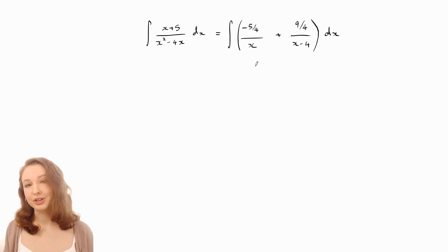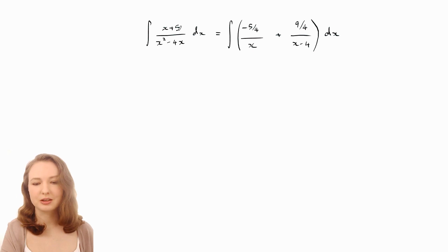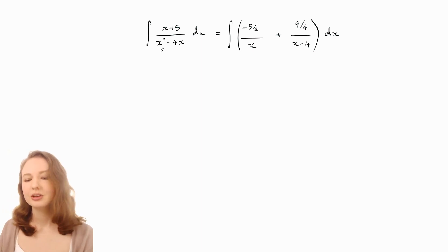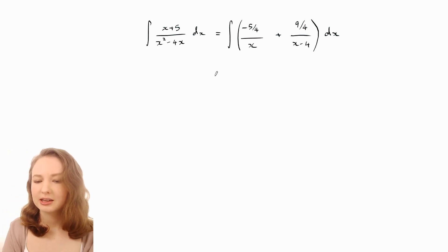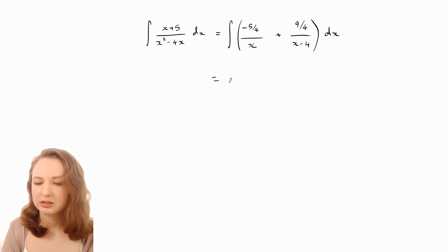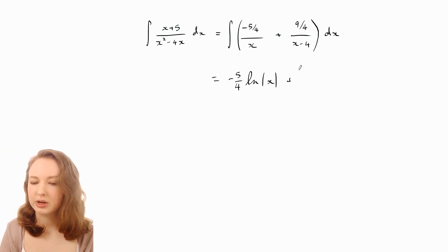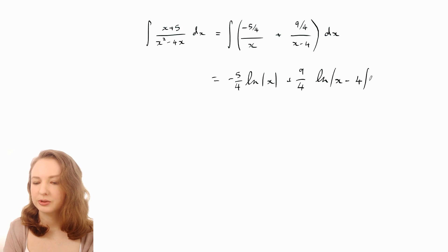If you did want to use those results to integrate the fraction, you can rewrite it using A=−5/4 and B=9/4, and then integrating gives −(5/4)ln|x| + (9/4)ln|x−4| plus a constant.